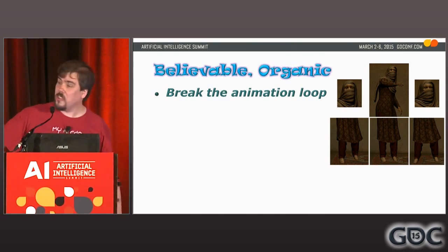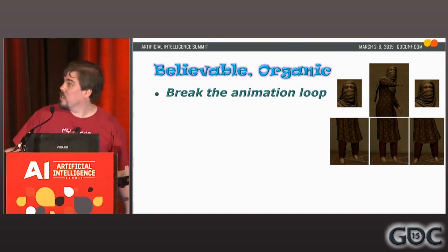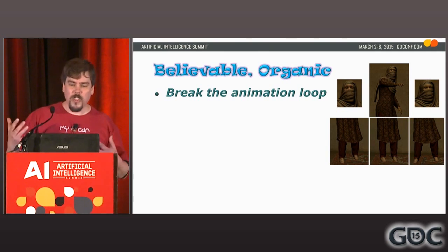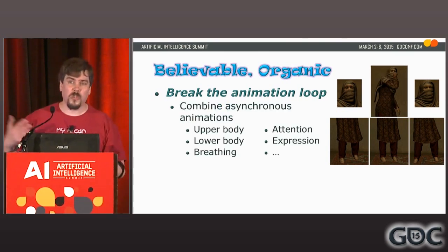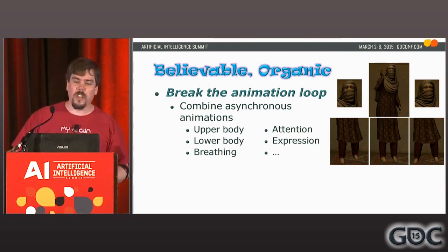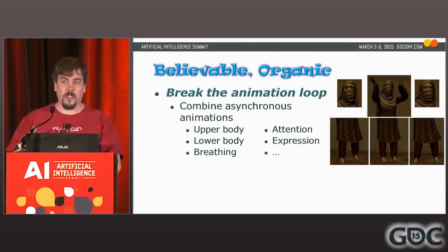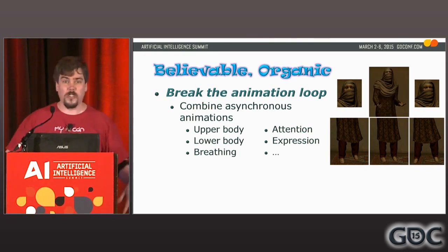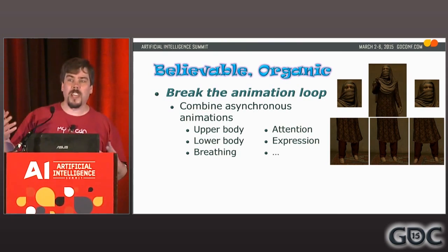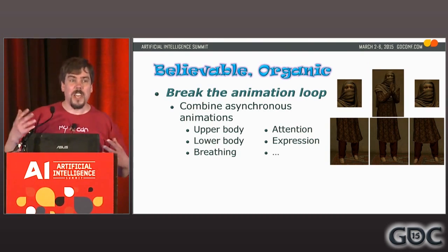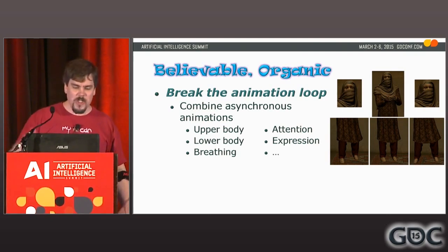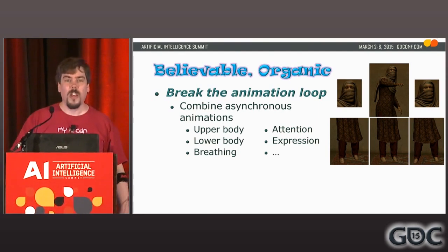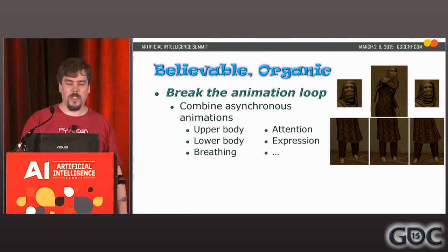On breaking animation loops: Angry Granny was a character I built at Lockheed Martin in about three months. We wanted to keep the character feeling alive for 10 to 15 minutes with a relatively small asset set. A great trick is to take looping animations of different lengths and use different animations on different parts of the body — lower body does pacing, upper body does gestures — and because they're asynchronous, when the same upper body animation plays, the lower body is doing something different, so it looks fresh. Split out breathing, attention, expression, tail — anything asynchronous helps break the loop.